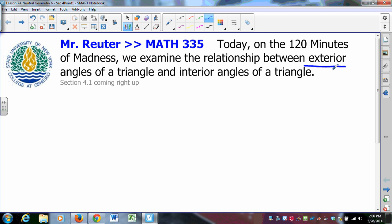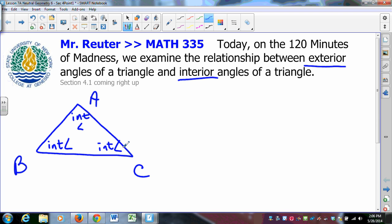On today's show, exterior angles, interior angles of a triangle, and how they all interplay. So, let's remind ourselves of what we mean by exterior and interior. If you have a triangle, maybe it's triangle ABC, this is an interior angle, this is an interior angle, this is an interior angle. They are inside the triangle. If we extend ray BC through C, you get an exterior angle.